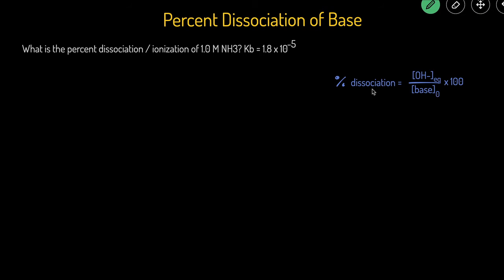The percent dissociation equation for a base is equal to the concentration of the hydroxide at equilibrium divided by the initial concentration of the base times 100.